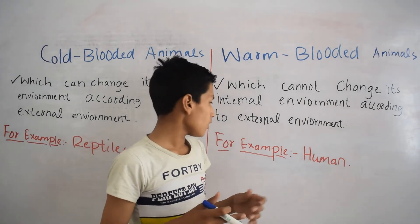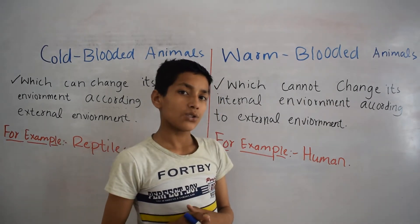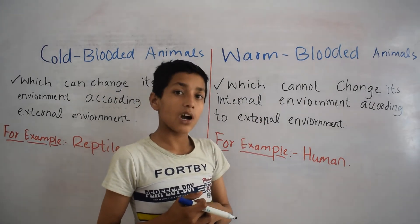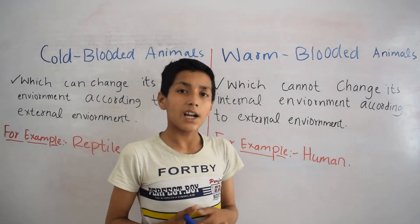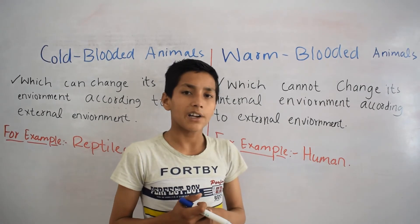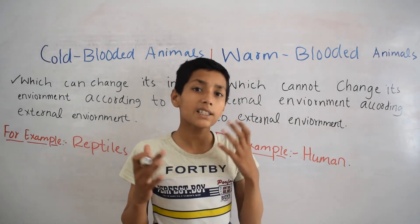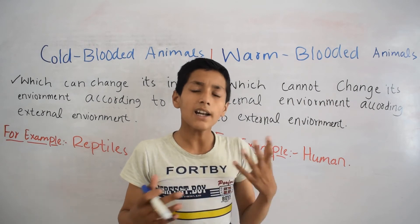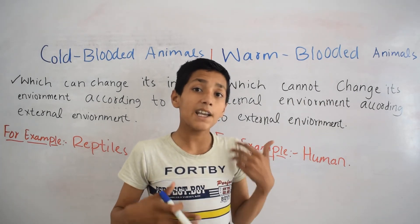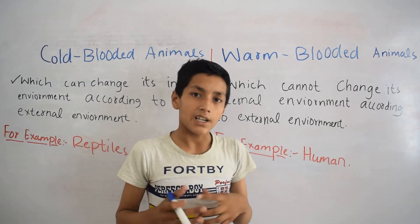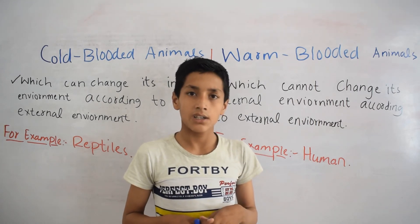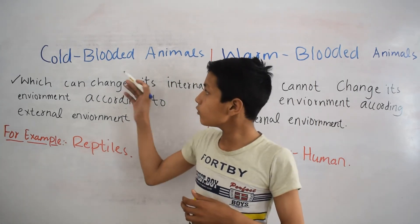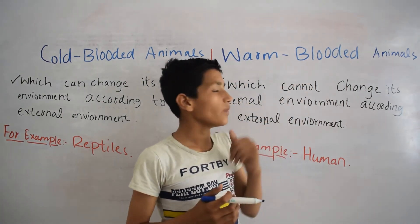For example, humans. So humans are warm-blooded animals because humans cannot change their internal environment according to the external environment. Humans can only live on land and cannot live in water, because the human body's constant temperature is 37 degrees centigrade. This was all about cold-blooded animals and warm-blooded animals.